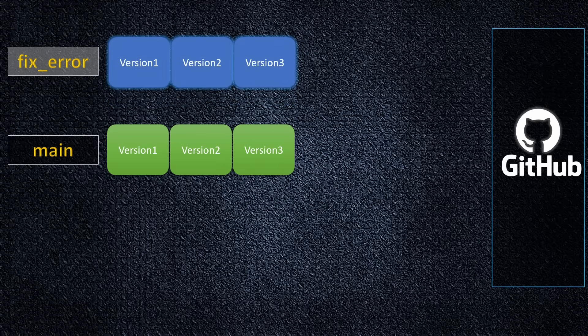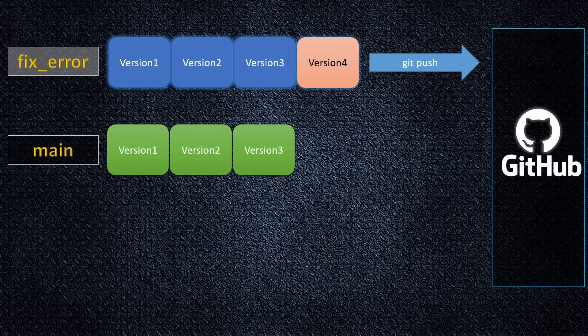Now I'm working, experimenting, fixing the bug, checking that the work looks good, and creating commit version 4. Then I'm pushing this branch with all my changes to GitHub. On GitHub, it creates the same branch — FixError — just on the remote.